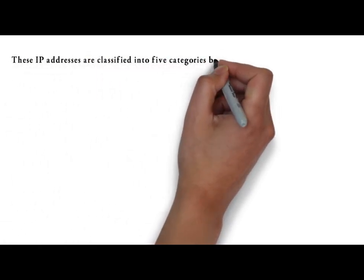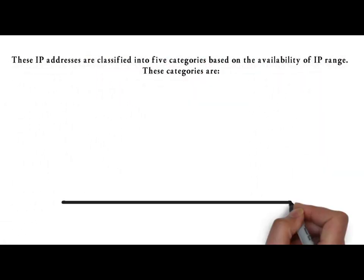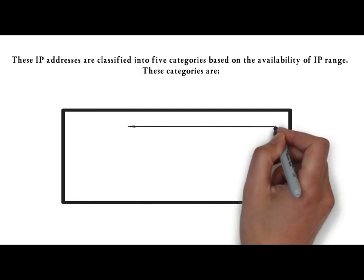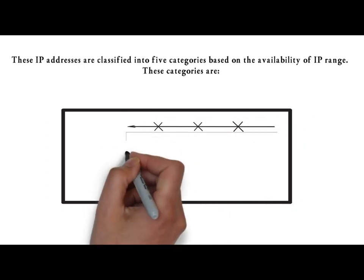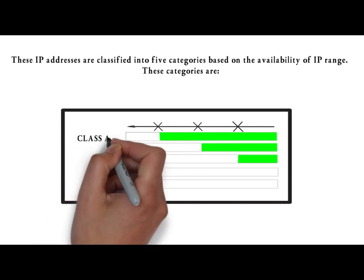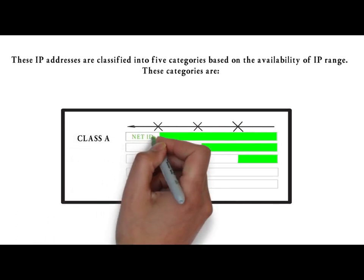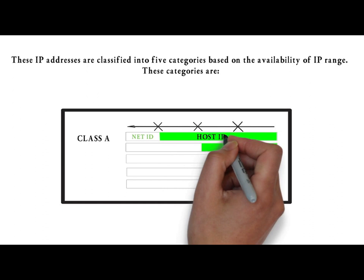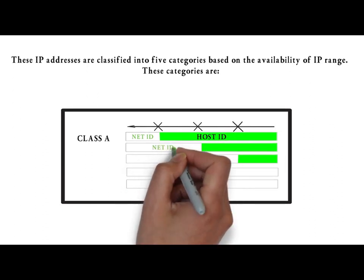The system of IP address classes was developed for the purpose of Internet IP addresses assignment. The classes created were based on the network size. For example, for a small number of networks with a very large number of hosts, the class A was created.